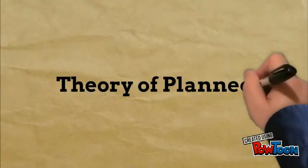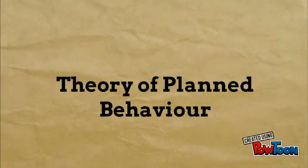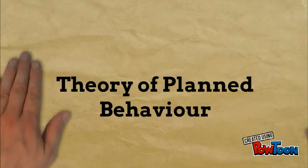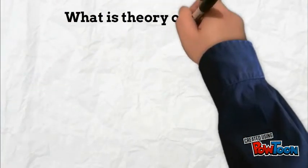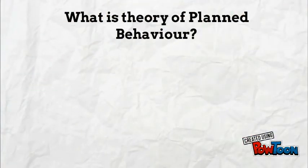A good theory that helps with explaining and understanding how decisions are made is called the theory of planned behaviour. This theory can also help predict how behaviour is formed when making decisions. What is the theory of planned behaviour? It consists of three main categories.